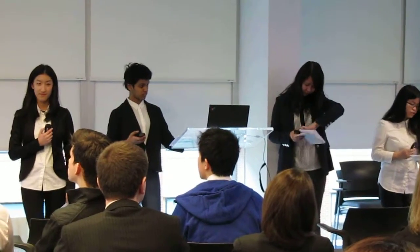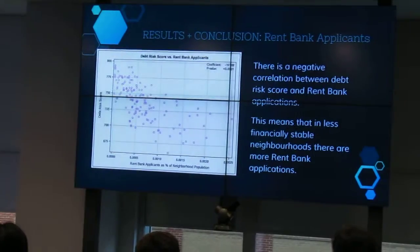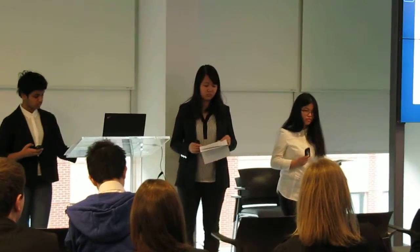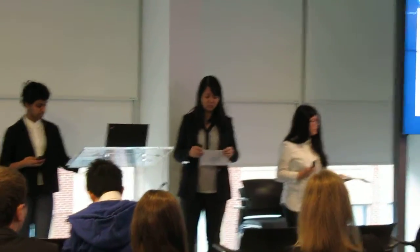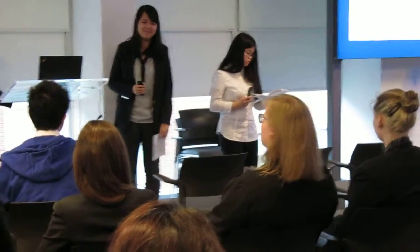This graph compares the debt risk score to the percentage of rent bank applicants. There is a negative correlation between the two variables, indicating that those in debt are more likely to apply for a rent bank. Since this data includes all applicants and not just those who received rent bank assistance, the evidence of financial standing is less substantial. However, it is clear that in less stable neighborhoods there are more people who require assistance paying for their rent.